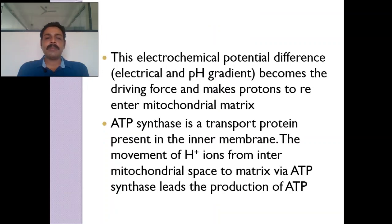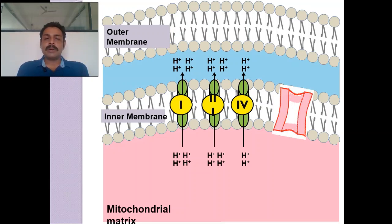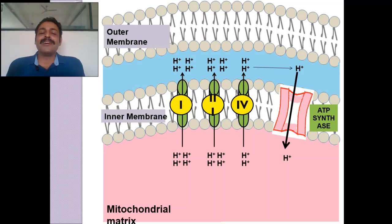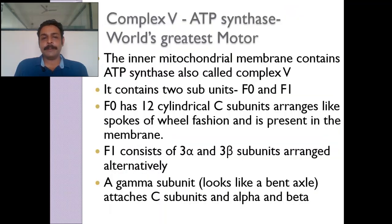Complex I, III, and IV are pumping protons, so there will be an electrochemical gradient. Because of this electrochemical gradient, hydrogen wants to come back, but the inner mitochondrial membrane is not freely permeable to protons, so we need a transporter. There is another complex — Complex V — which is the transporter that allows these protons in the inter-mitochondrial space to enter into the mitochondrial matrix. During this process, ADP should become ATP.